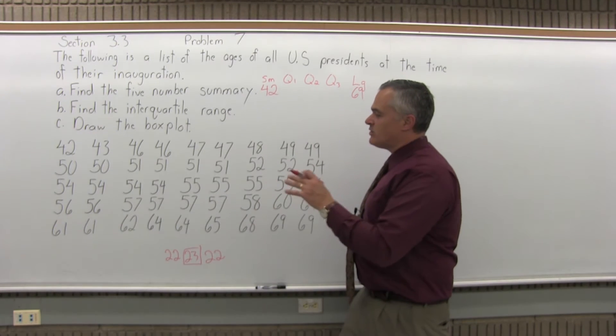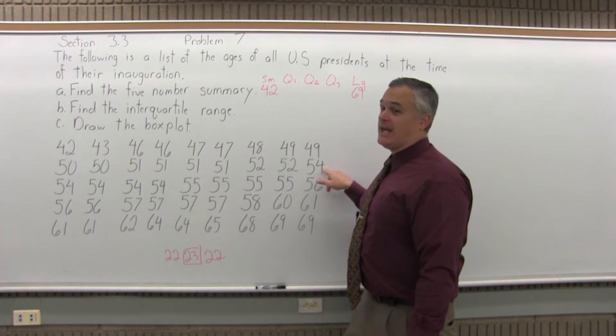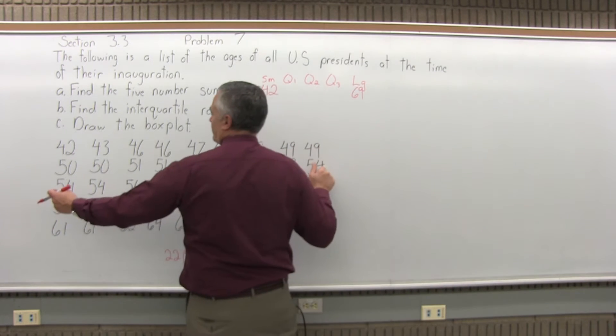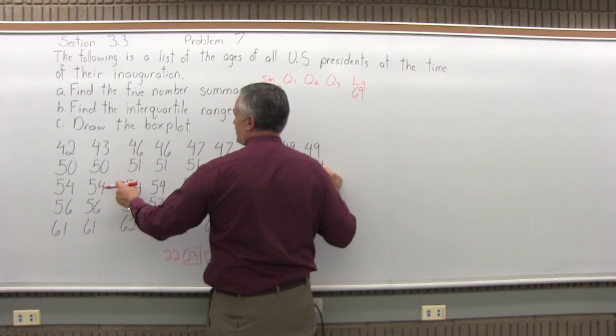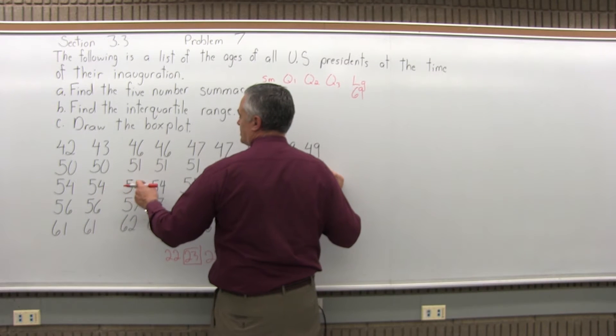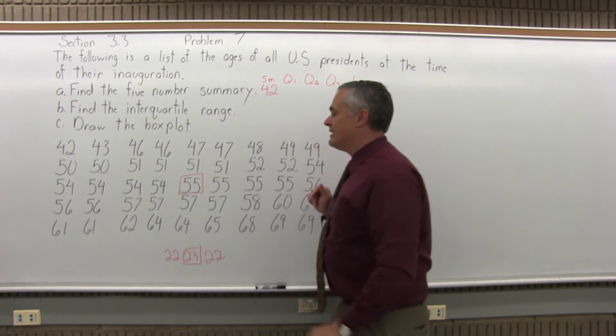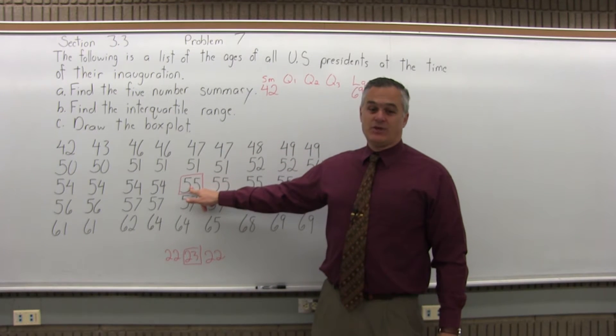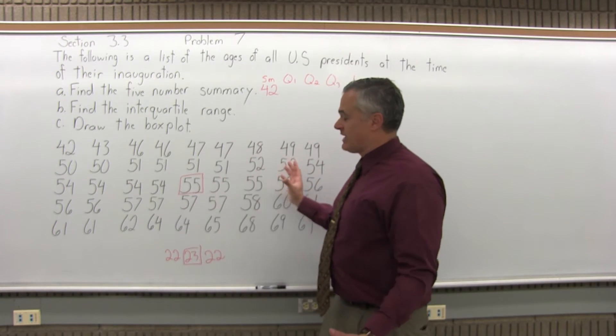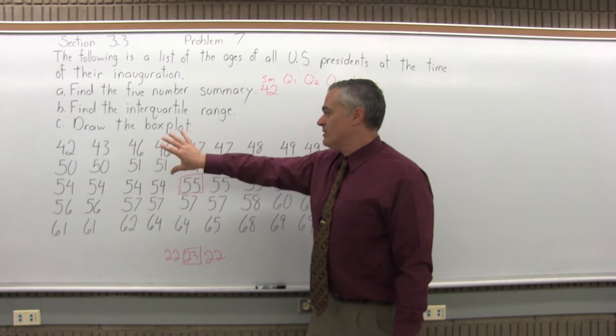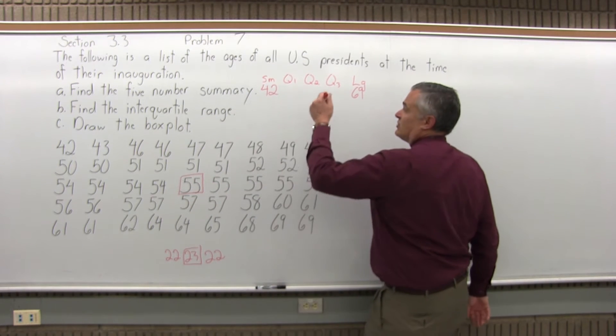22 that are smaller, 22 that are bigger. Since these are rows of nine, this is position nine, position 18, and as I start the next row, position 19, 20, 21, 22, 23. This president, who was 55 when they were inaugurated, is right in the center of the list. So, there's 22 presidents that were younger at the time of their inauguration, 22 that were older. 55 is the midpoint, which makes it Q2, the median.